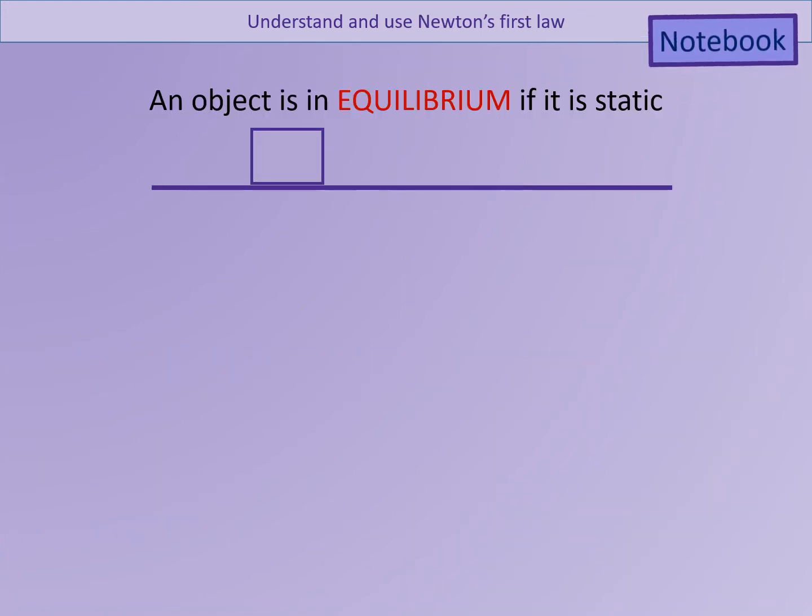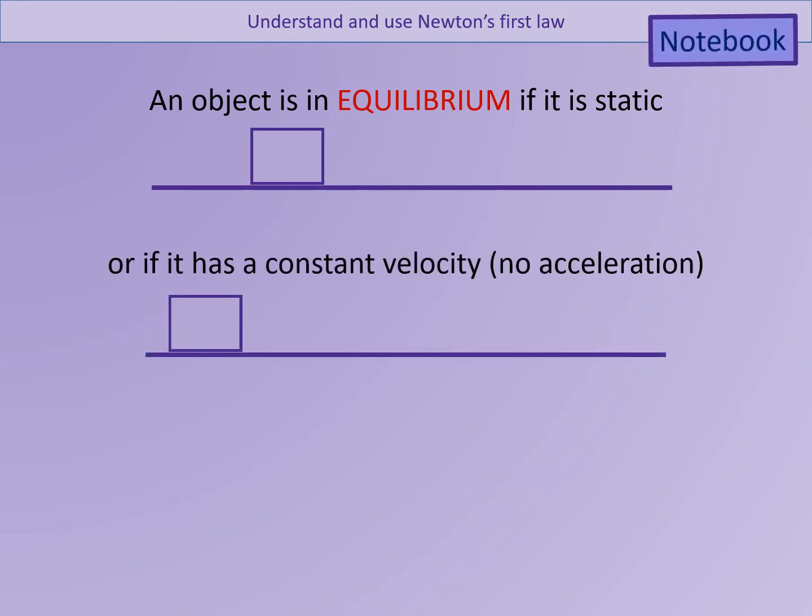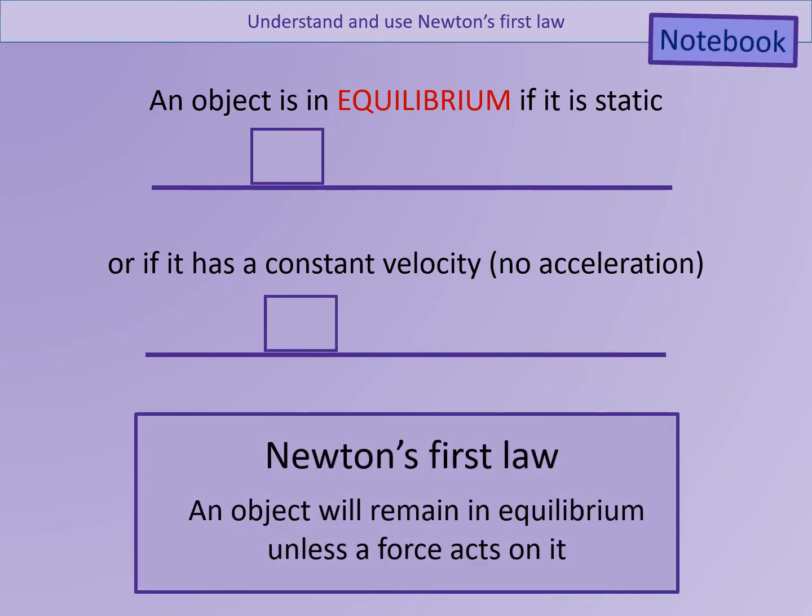An object is said to be in equilibrium if either it is static, i.e. it is not moving, or if it has a constant velocity. In other words, if there is no acceleration. Newton's first law tells us that an object will remain in equilibrium unless a force acts on it. In this case, both the stationary object and the object moving with a constant velocity do not have any other forces acting on it, which means that there is no acceleration.